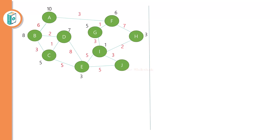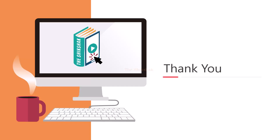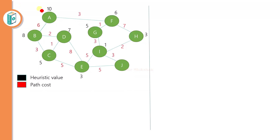I have one graph here — a tree structure with some values. The black color values in each node are the heuristic values for that particular node. For example, F has heuristic value 6, H has heuristic value 3, I has heuristic value 1, and so on. The red color values are G(N) — the values from the start node to the particular node. Based on these two values, we will find out F(N).